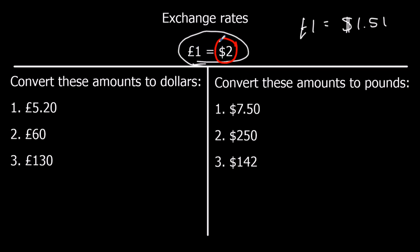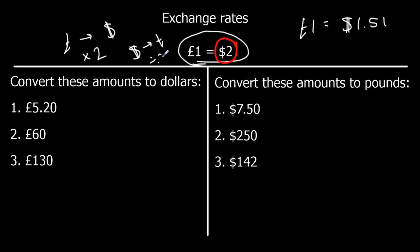If I want to go from pounds to dollars, I'm going to times — pounds to dollars, that'll be times by 2. And if I want to go back, dollars to pounds, that'll be divide by 2. So if I'm going forwards I'm multiplying, if I'm going back I'm dividing.